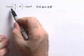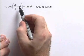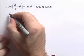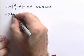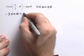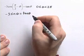First thing we'd like to notice is that cosine of pi over 2 minus theta is equal to sine of theta. So we'll have minus 3 sine theta is equal to the tangent of theta.